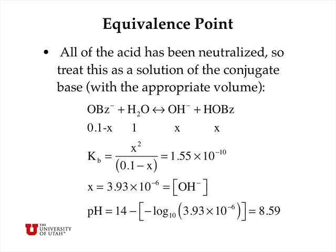At the equivalence point all of the benzoic acid has been neutralized and converted to benzoate anion. We can treat this as if we had prepared the solution from sodium benzoate at the appropriate volume — in this case the volume has doubled because the concentrations of acid and base were the same, giving 0.1 moles per liter of benzoate anion. Writing a weak base equation, we set up Kb calculated from Ka, solve for the hydroxide ion concentration in the usual way, and then pH equals 14 minus pOH, giving 8.59.